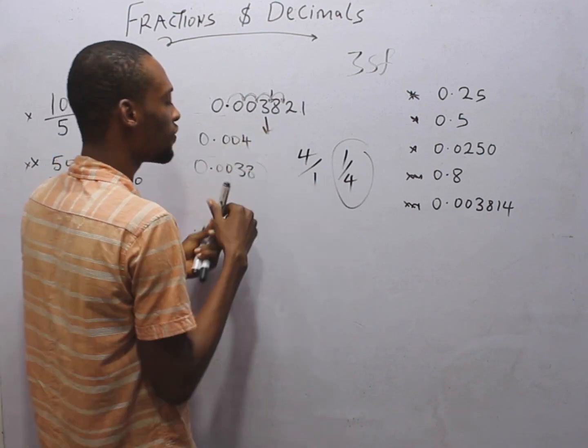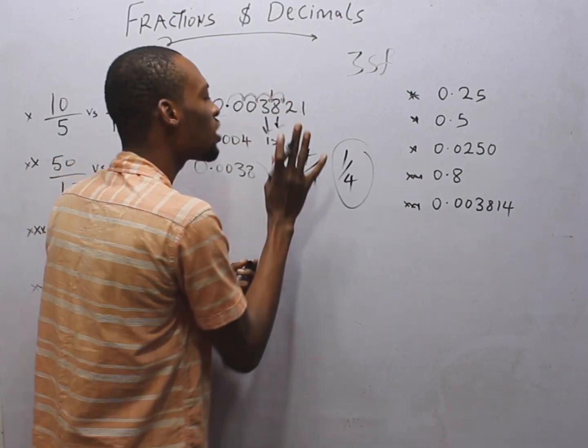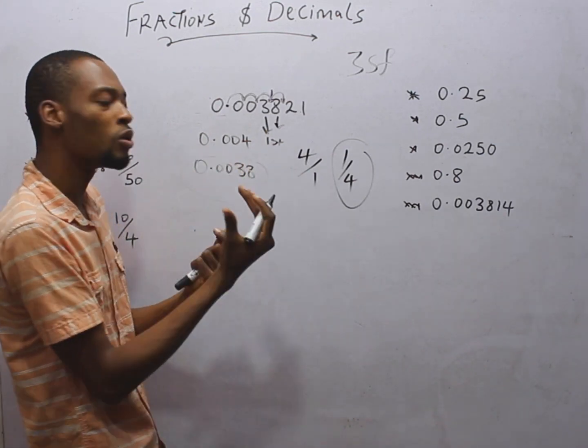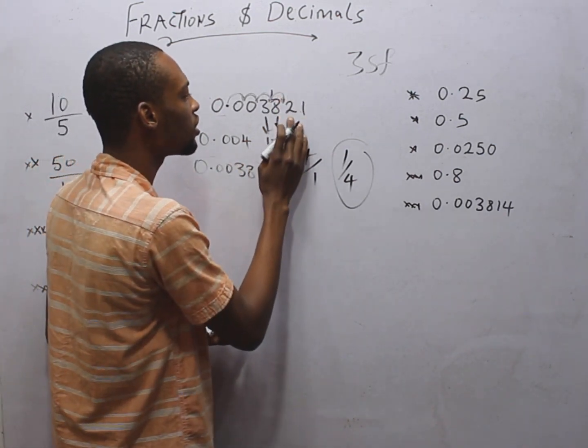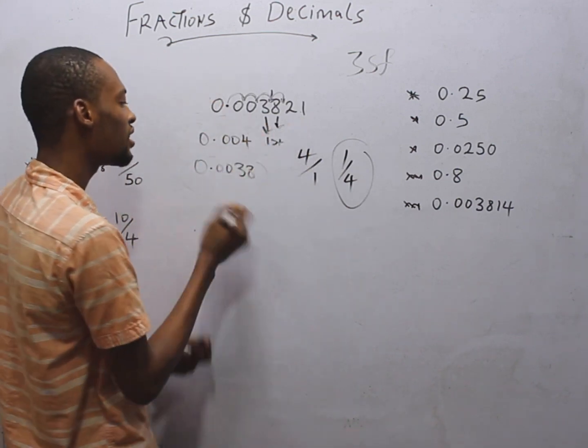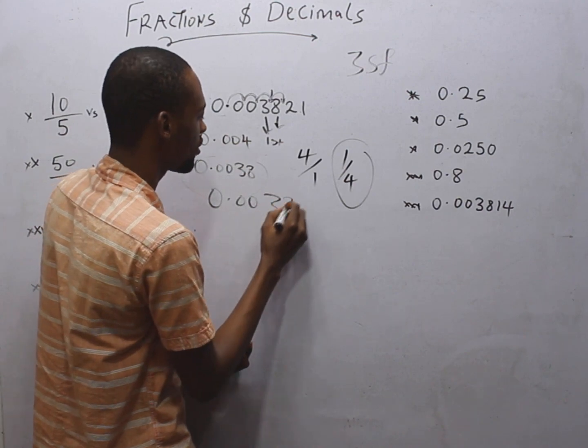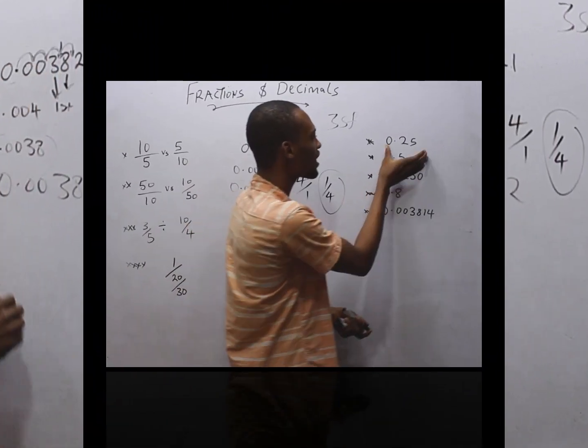For example, this is the first significant figure. The second is 8. If it is 0, it will be the second significant figure. The third significant figure is 2. So round off to 3 significant figures, it is simply 0.00382.